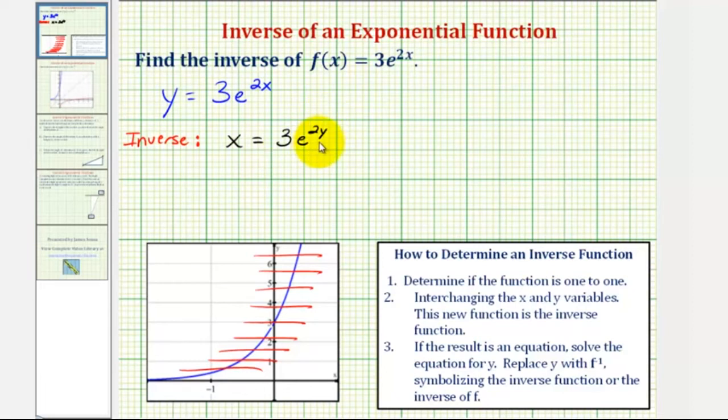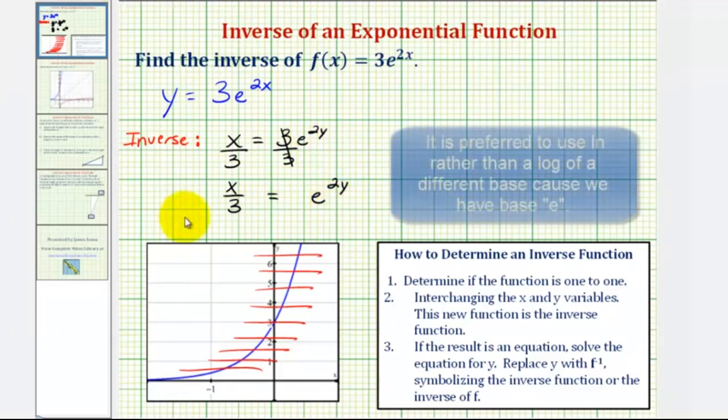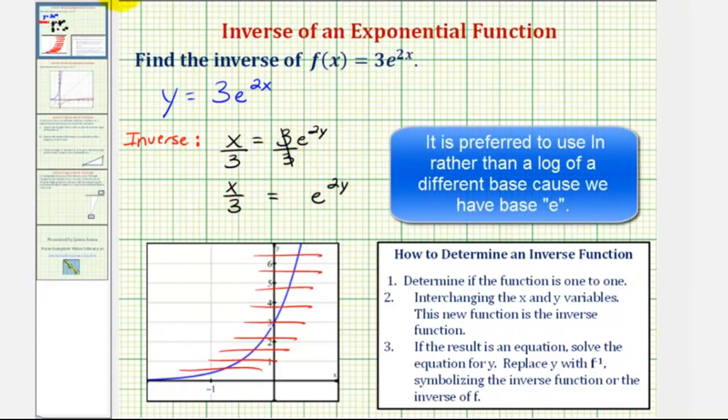But now we need to solve this for y. So let's begin by dividing both sides by three. So now we have x divided by three equals e raised to the power of two y. Notice how the variable y is in the exponent. So if we take the natural log of both sides of the equation, here and here...